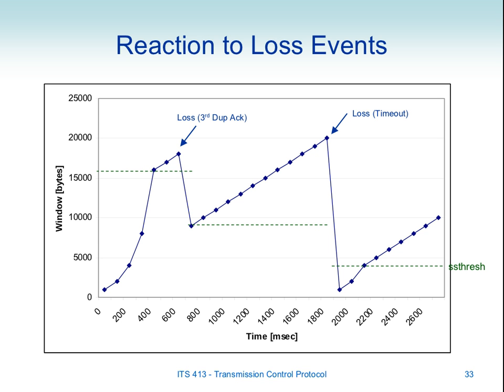If we get packet loss due to a timeout, we again halve the threshold — from 8,000 down to 4,000 — but we drop our sending rate to the minimum, which is usually one maximum segment size, and basically start from the beginning again. We go into slow start until we reach the new lower threshold, and then additive increase. The only difference is our threshold is smaller, so we move into additive increase earlier.